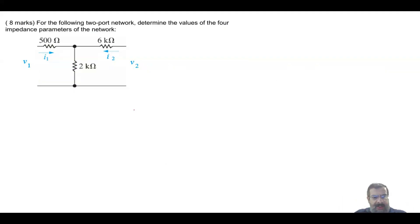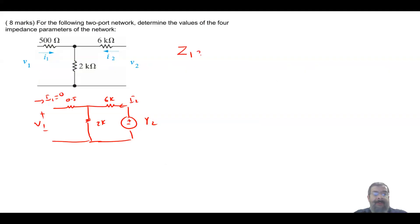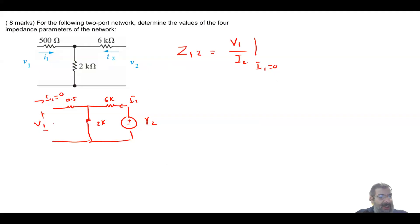Now reverse the configuration: apply the voltage to the right side, so v2 drives the circuit with the 6 kΩ and current i2 entering the right port. The 2 kΩ and 0.5 kΩ are on the left side, and i1 = 0 (open circuit on the left). We want z12 = v1/i2 when i1 = 0.